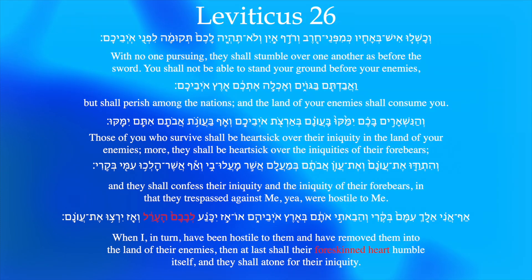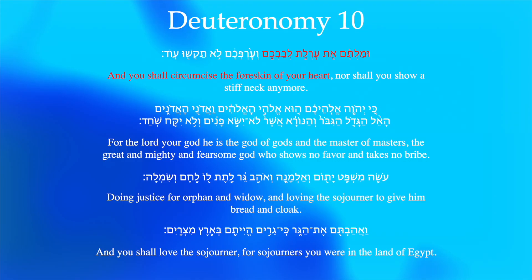In that Leviticus text, many translations don't even translate it as 'foreskin' — JPS would say something like 'thickening.' The literal translation here is 'and you will circumcise the foreskin of your hearts.' Alter does translate it that way, more literally. The question is: is it a metaphor or is it not a metaphor? What's going on here?